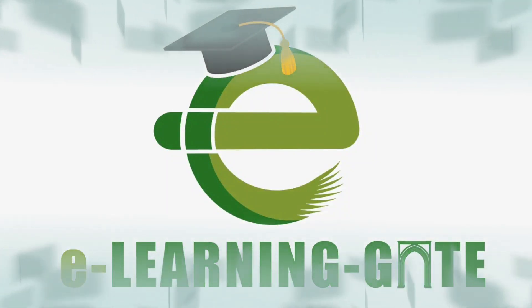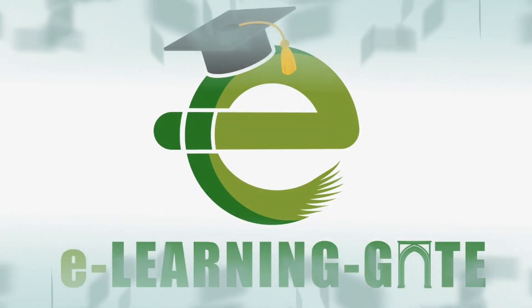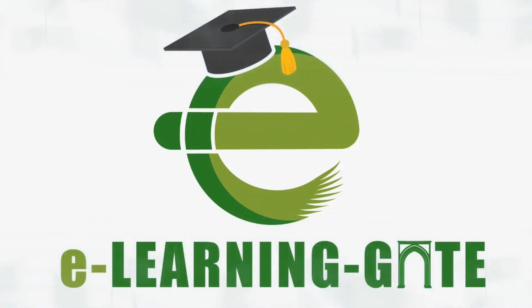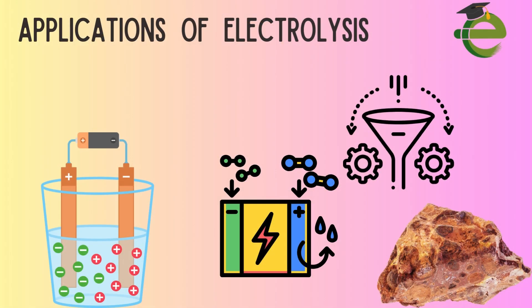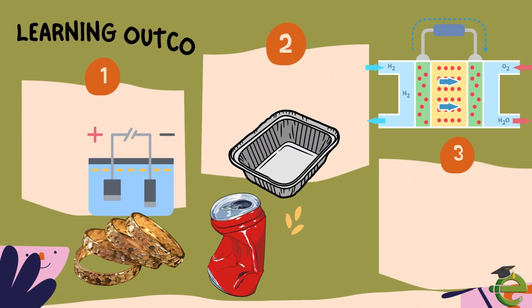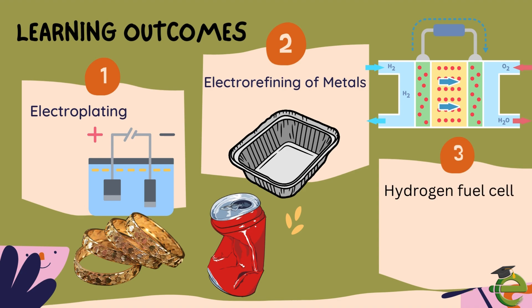E-Learning Gate opens the cognitive learning paths with the help of digital resources. In this lesson on applications of electrolysis, the learning outcomes include electroplating, electro-refining of metals, and the hydrogen-oxygen fuel cell.